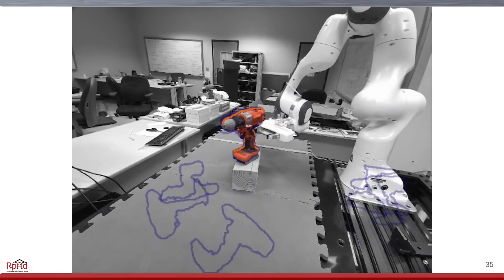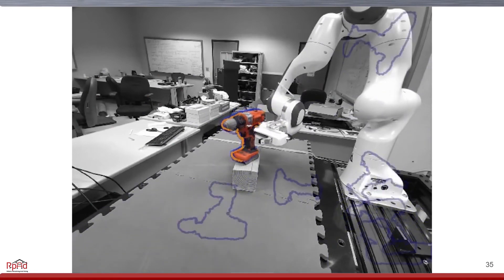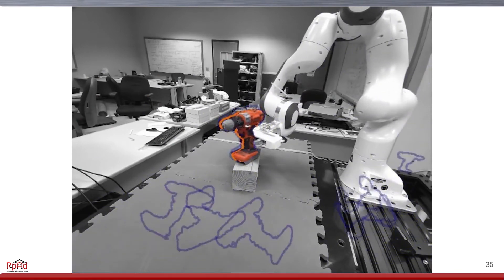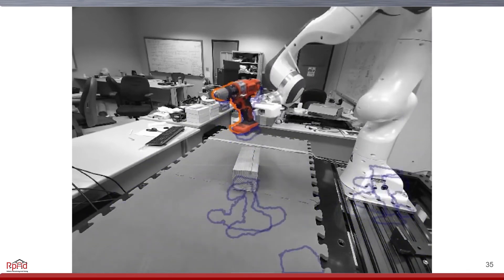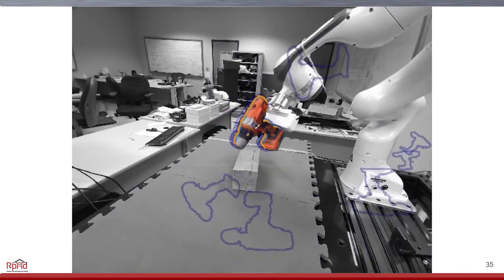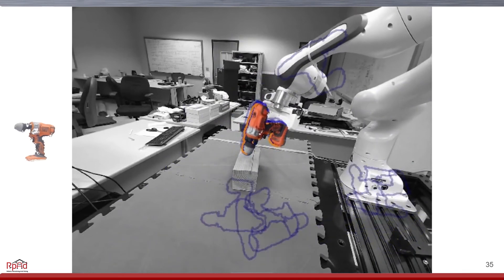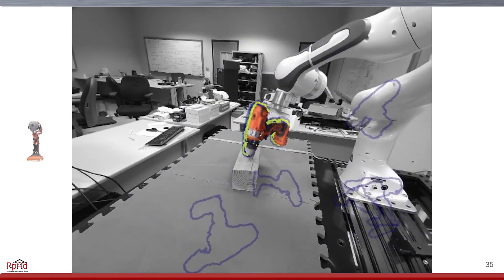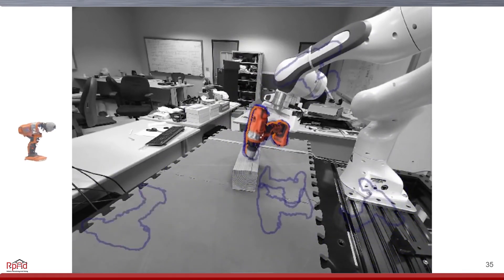We also tested our method using an object model we build at test time using standard surface reconstruction techniques. We find that our method is able to track this object using only a poor quality object model captured at test time, as shown on the left.